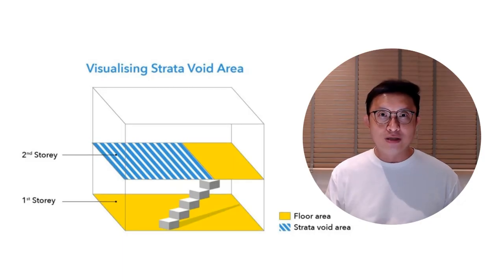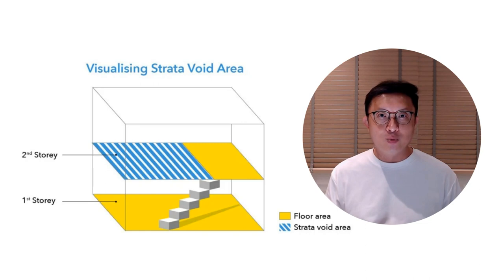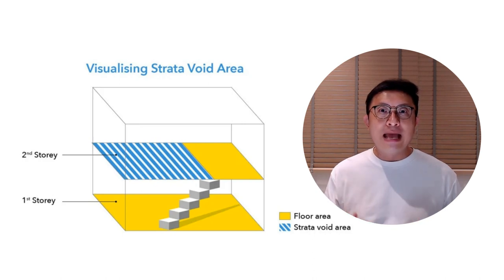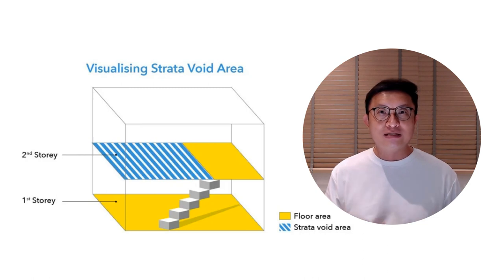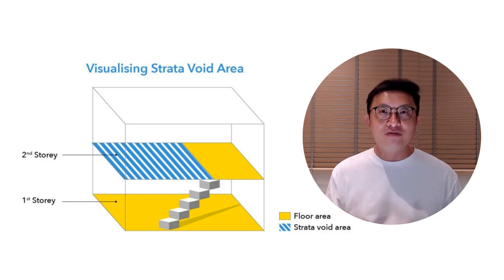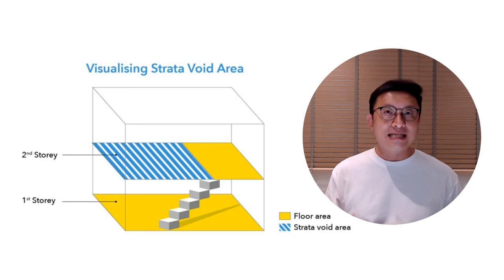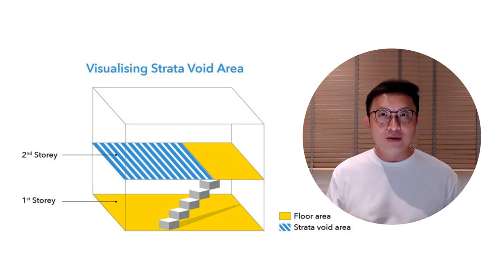Have you heard of paying for airspace for properties with very high ceilings? Another change is in the strata void area, which is to be excluded from strata area computation, effectively removing it from any GFA inclusion. In the past, some developers included strata void areas in their total saleable area, which effectively lowered the per square foot price of the unit. Though units with very high ceilings do feel different and sometimes carry a sense of opulence, with the new rules, developers will have little motivation to build high-ceiling units, especially for condos not in the luxury segment.